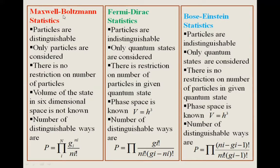In the case of Maxwell-Boltzmann statistics, there is no restriction on the number of particles. In Fermi-Dirac statistics, there is a restriction on the number of particles in a given quantum state. In Bose-Einstein statistics, there is no restriction on the number of particles in a given quantum state.